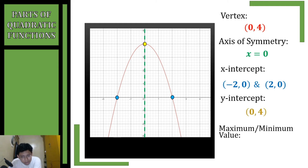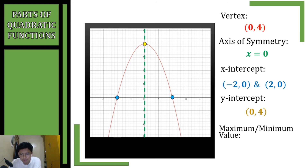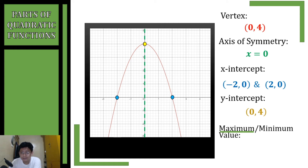For the y-intercept, it is also our vertex: (0, 4). It is possible for the y-intercept and vertex to be the same point. For the maximum or minimum value, since the graph is opening downwards, the vertex is on top, so we get the maximum value, which is the y-coordinate of the vertex: 4.